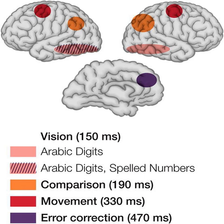Reaction time is the time that elapses between a person being presented with a stimulus and the person initiating a motor response to the stimulus. The processes that occur during this brief time enable the brain to perceive the surrounding environment, identify an object of interest, decide an action in response to the object, and issue a motor command to execute the movement. These processes span the domains of perception and movement, and involve perceptual decision-making and motor planning. Response time is the sum of reaction time and movement time.